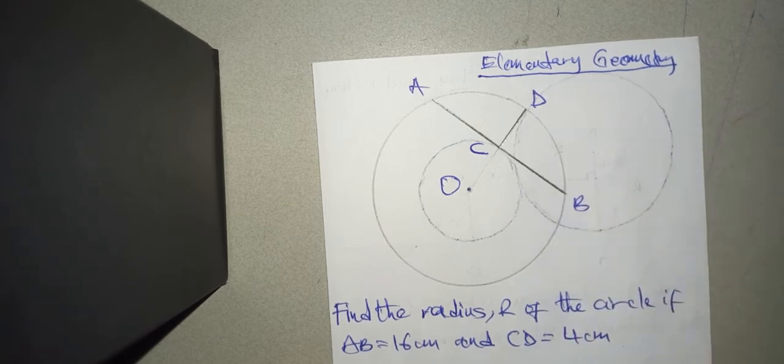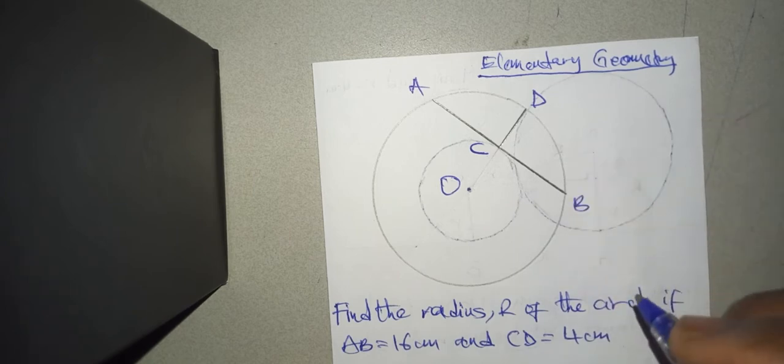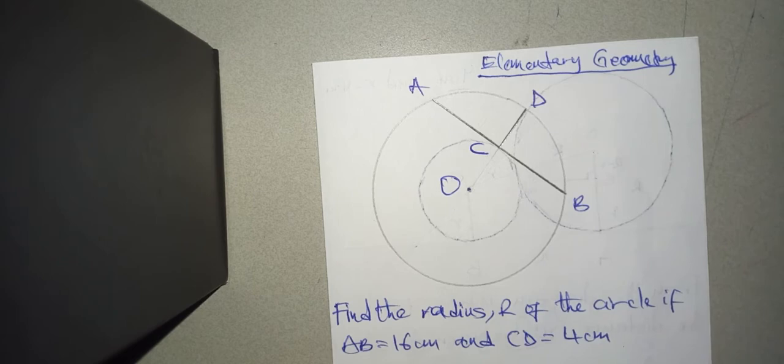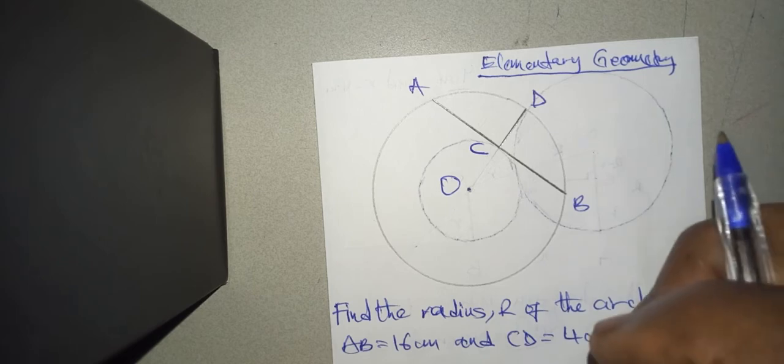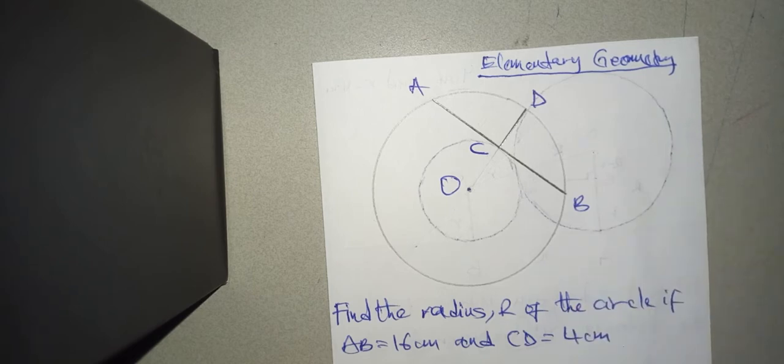All right, here we are going to use elementary geometry. Now, we're told that AC is equal to CB, and we know this is 4 centimeters.